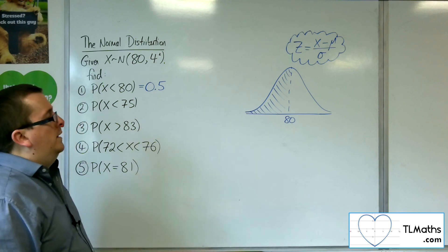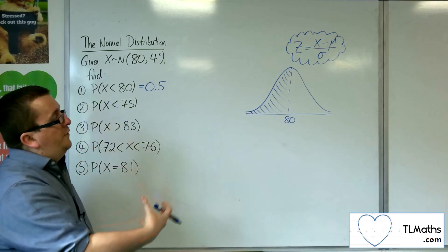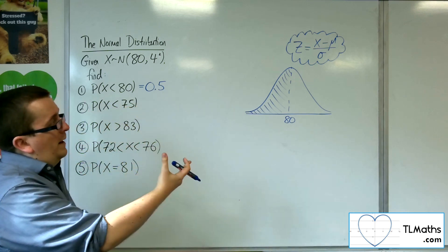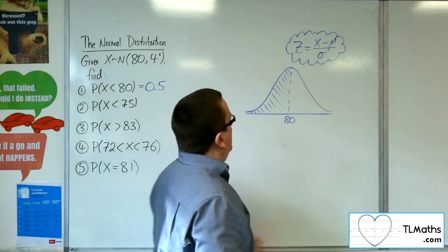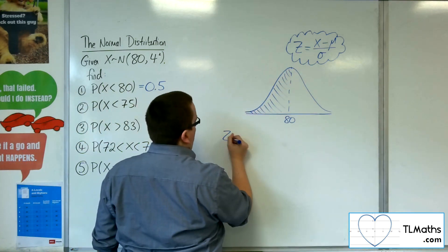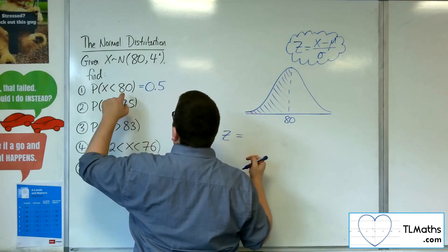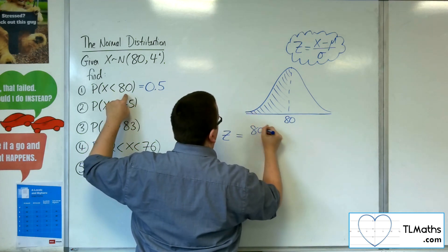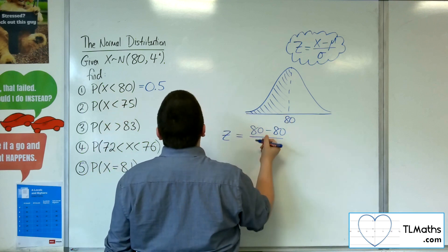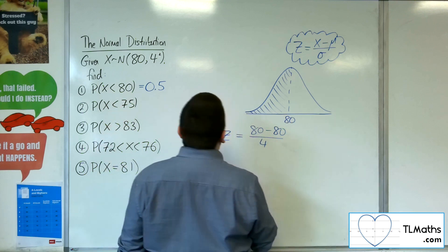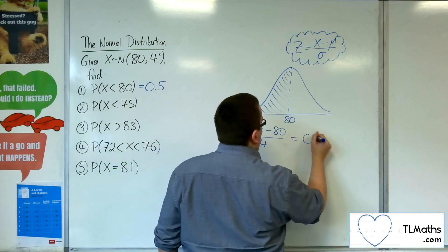What we would do is convert our probability to the standard normal distribution using this formula. We would write down Z equals the X value — which is 80 — take away the mean value — which is also 80 — divided by the standard deviation, which is 4. So what we get is 0.